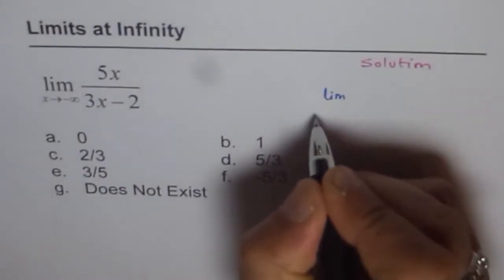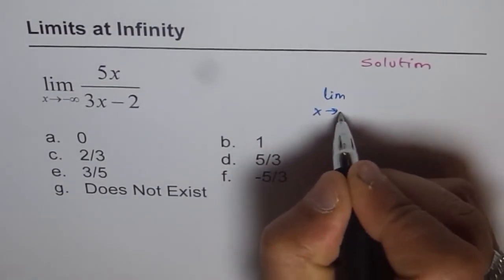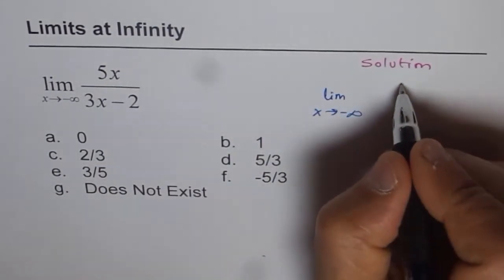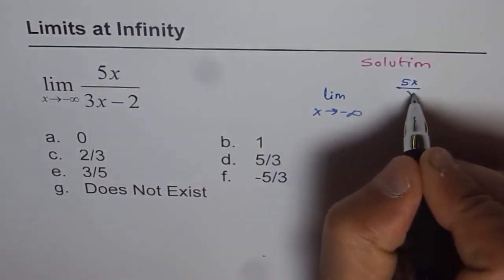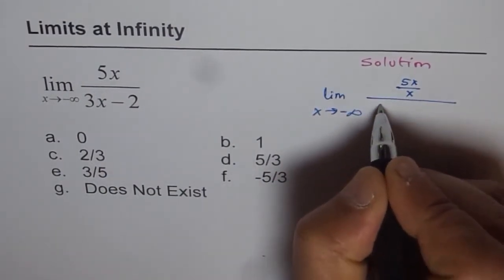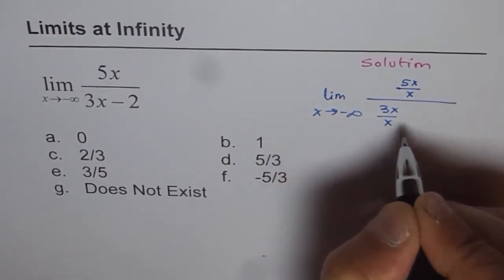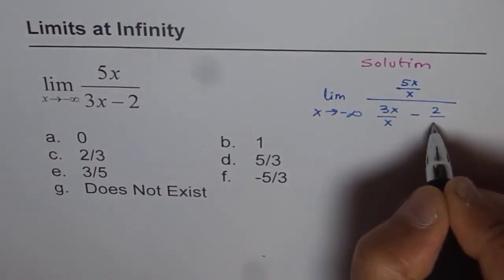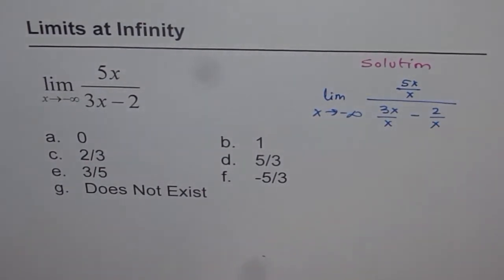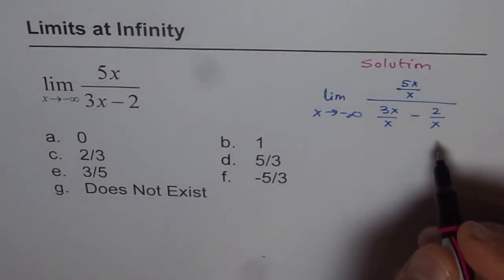We get the limit of the function as x approaches negative infinity. We can write this as 5x over x divided by 3x over x minus 2 over x. So what we did here is divide both numerator and denominator by x.